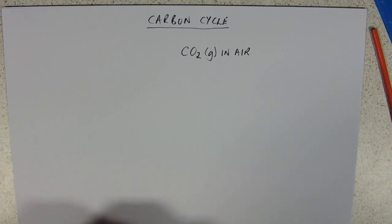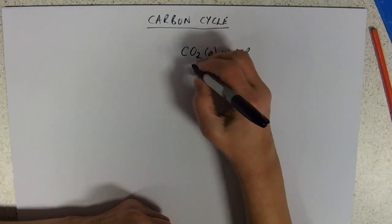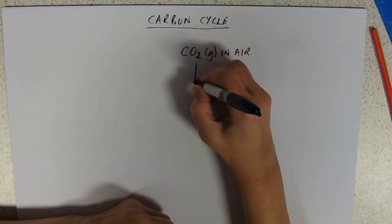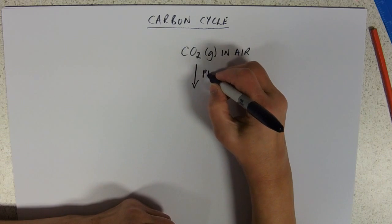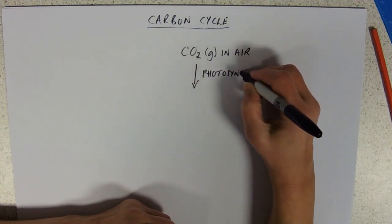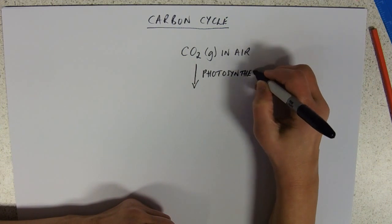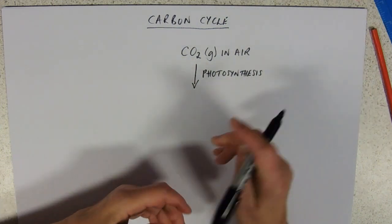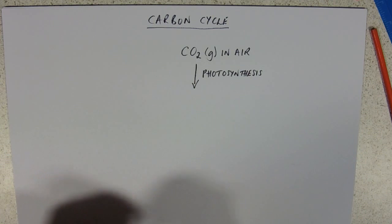And like all nutrient cycles, we're going from inorganic to organic. So, the way in which carbon dioxide gas in air gets into its organic form is by photosynthesis, about which we know everything. So, of course, that is going in in the Calvin cycle, carbon dioxide fixation.